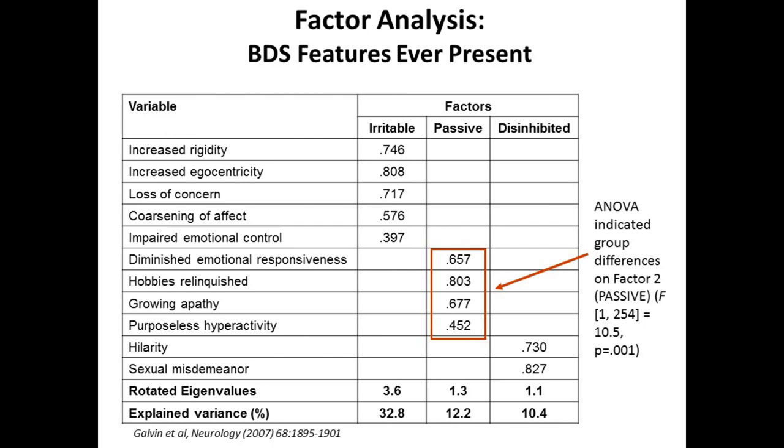We put the personality data into statistical models and found that we can classify personality into three basic traits: an irritable trait, a passive trait, and a disinhibited trait. The passive trait describes the Lewy body group. When I see patients and ask families about personality changes, what I consistently hear from families of Alzheimer's disease patients is that they start to become more irritable, cranky, agitated, cantankerous, ornery.